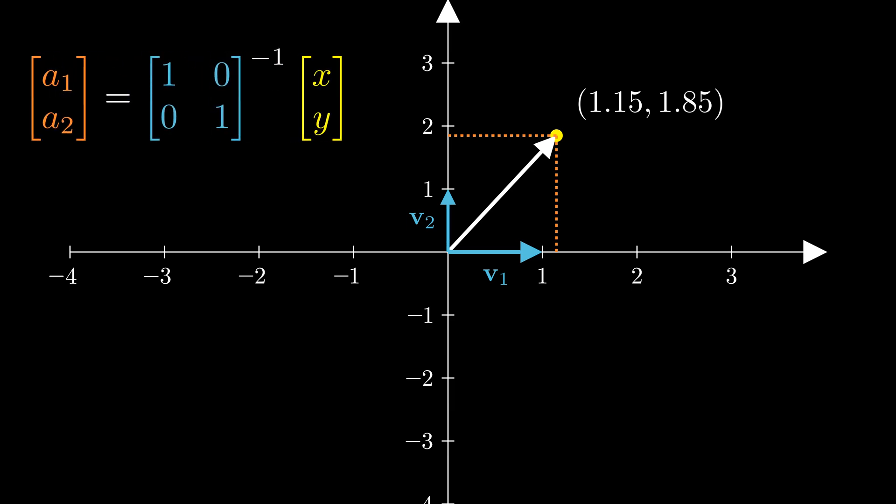We can write this concisely as matrix vector multiplication by stacking basis vectors as columns. Now finding the coefficients is simple. Just invert the basis matrix. This shows that we can find the coefficient a1 by computing the dot product between the basis vector v1 and the data point p. Same goes for a2.